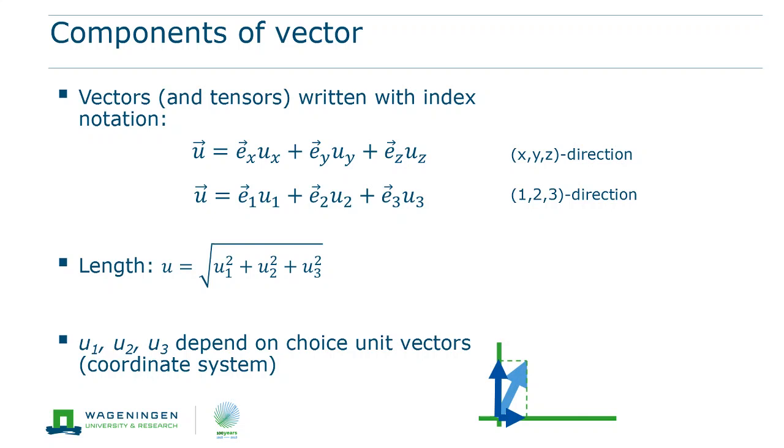It's important to realize that the length of the components depends on the choice of your coordinate system. So, here we have a blue vector in a green coordinate system. And although the original vector does not change, the components change if we change the coordinate system.